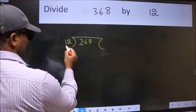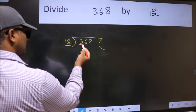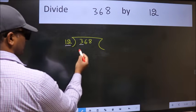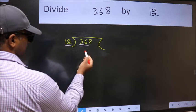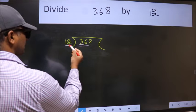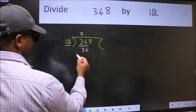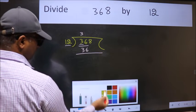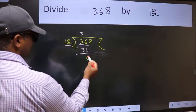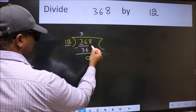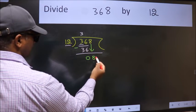368 have 3 and here 12. 3 is smaller than 12, so take two numbers, 36. When do we get 36 in 12 table? 12 threes, 36. Now we should subtract. We get 0. After this, bring down the beside number. So 8 down.